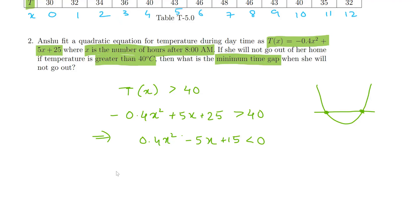For this, we find out the roots using the formula minus b plus or minus under root of b squared minus 4ac divided by 2a. How did we know that this parabola is upward facing? Because a is greater than 0. a here is 0.4, b is minus 5, and c is 15.